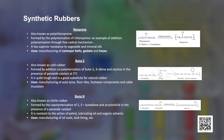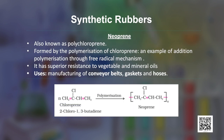There are three commonly used synthetic rubbers: neoprene, Buna S, and Buna N. Neoprene, also known as polychloroprene, is formed by the polymerization of chloroprene via addition polymerization through a free radical mechanism. Neoprene has superior resistance to vegetable and mineral oils and is therefore used for manufacturing conveyor belts, gaskets, and hoses.